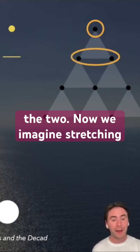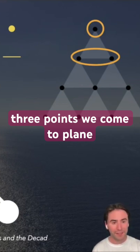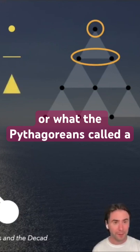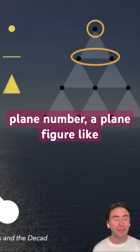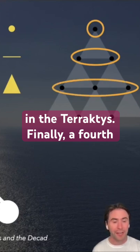Now we imagine stretching out a third point. And with three points, we come to a plane — or what the Pythagoreans called a plane number, a plane figure, like a triangle — and the third step in the Tetractus.